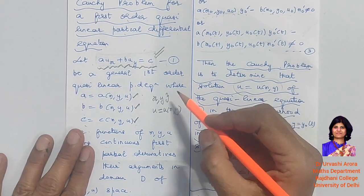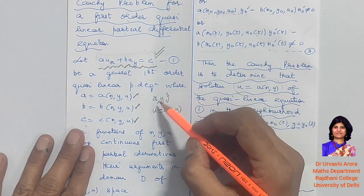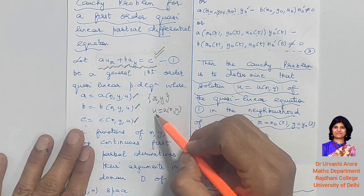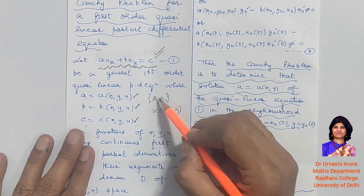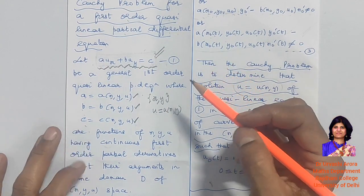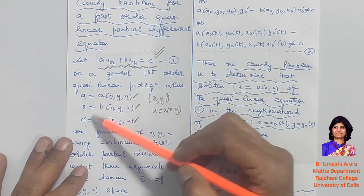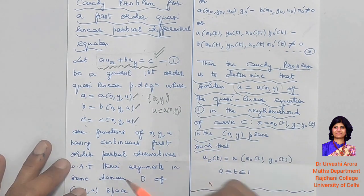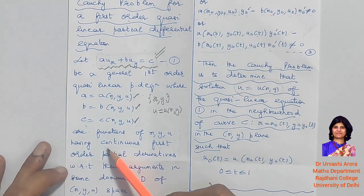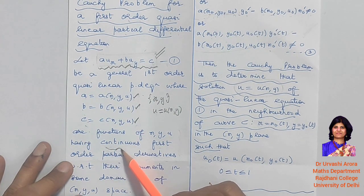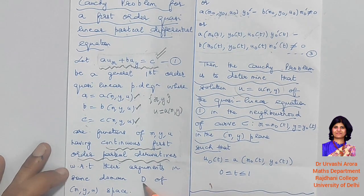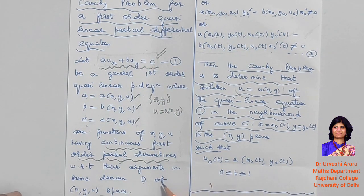This is the simplest possible case when you have a partial differential equation with two independent variables and one dependent variable. When a, b, and c are functions of x, y, and u, and when they satisfy the condition that a, b, and c have continuous first-order partial derivatives with respect to their arguments in some domain d of the x, y, u space.